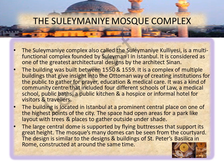The building is located in Istanbul at a prominent central place on one of the highest points of the city. The space had open areas for a park-like layout with trees and places to gather outside under shade. The large central dome is supported by flying buttresses — I have shown a picture which gives a clear indication of the central dome, supported at great height by these different supports. The mosque's many domes can be seen from the courtyard. The design is similar to St. Peter's Basilica in Rome, constructed at around the same time.